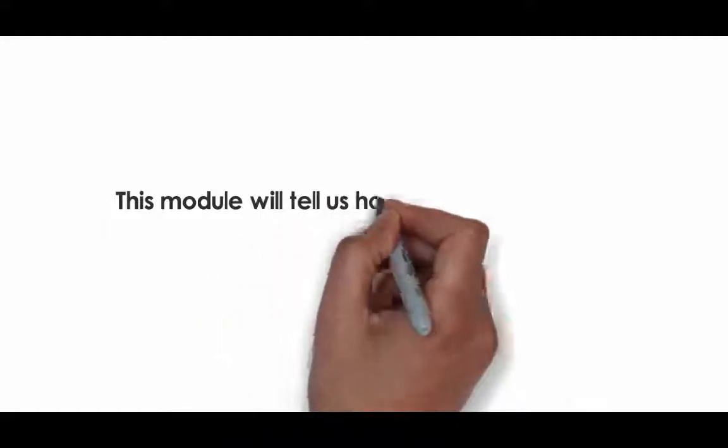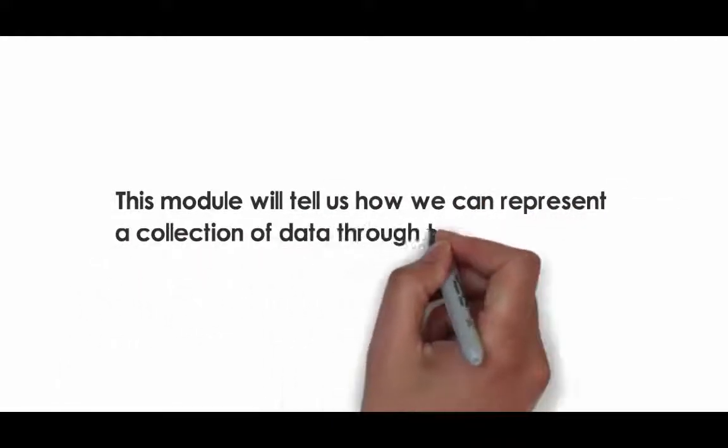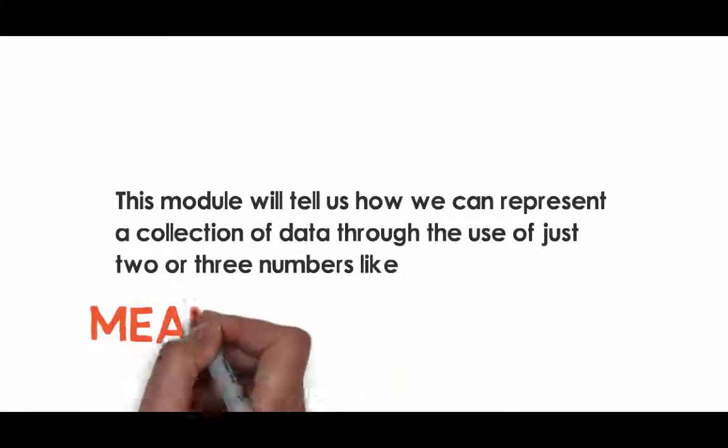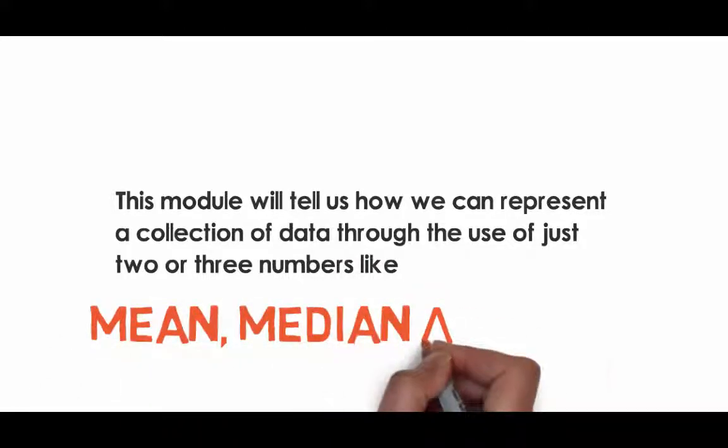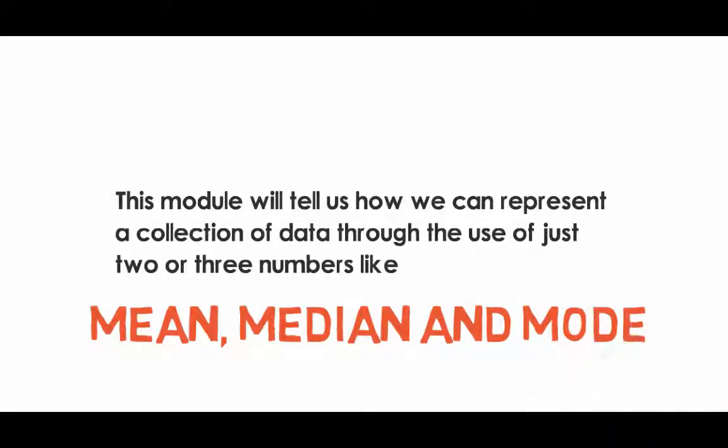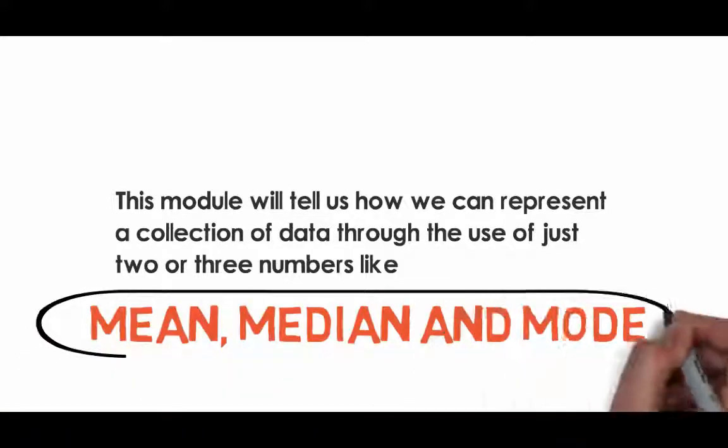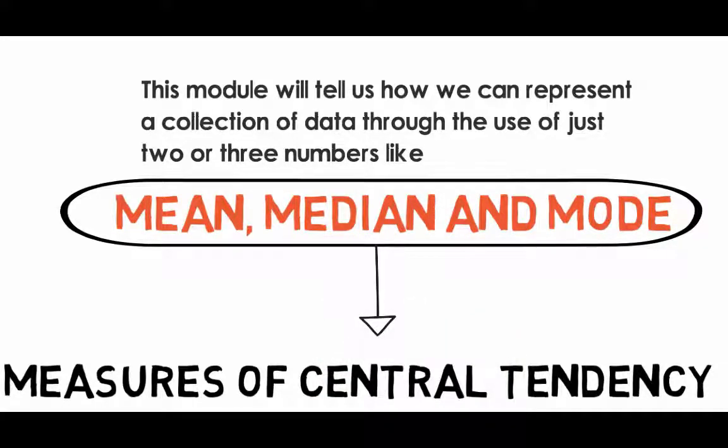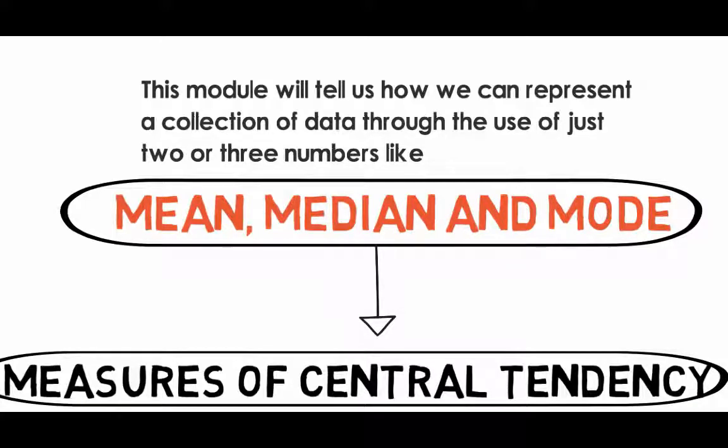This module will tell us how we can represent a collection of data through the use of just two or three numbers like the mean, the median, and the mode. These are known as Measures of Central Tendency since these values lie in the middle of the data set. These numbers show us the basic characteristics of the set of information gathered.